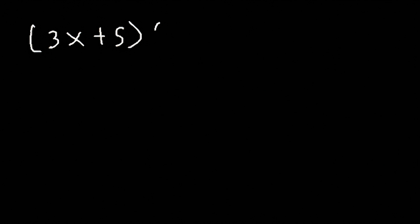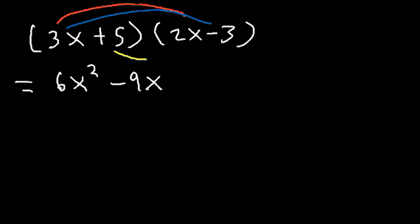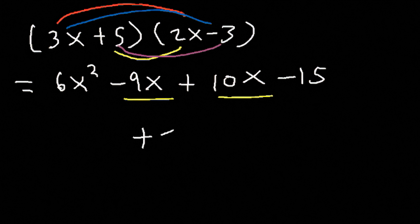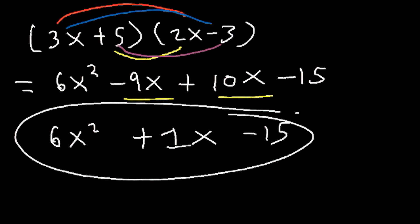Now let's talk about how to multiply polynomial expressions. Let's start with two binomials: 3x plus 5 multiplied by 2x minus 3. We need to use the FOIL method. 3x times 2x is 6x squared. 3x times negative 3 is negative 9x. 5 times 2x is 10x. And 5 times negative 3 is negative 15. Combining like terms, negative 9 plus 10 is positive 1, so the answer is 6x squared plus x minus 15.